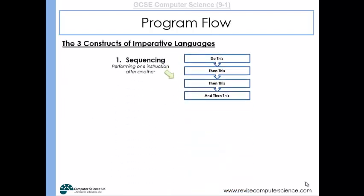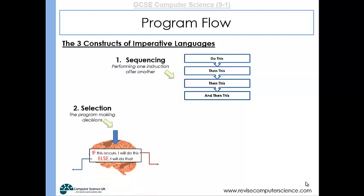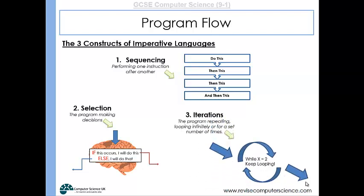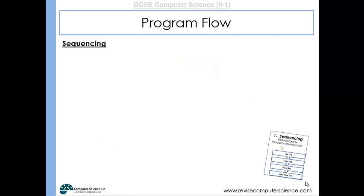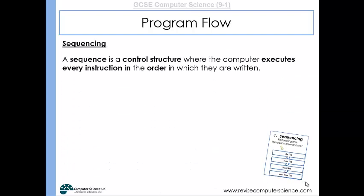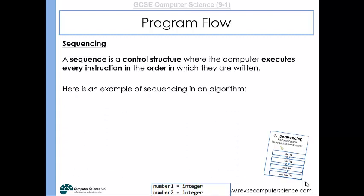Sequencing is just one instruction being performed after another in a linear fashion. It's a control structure where a computer executes every instruction in the order in which they are written.